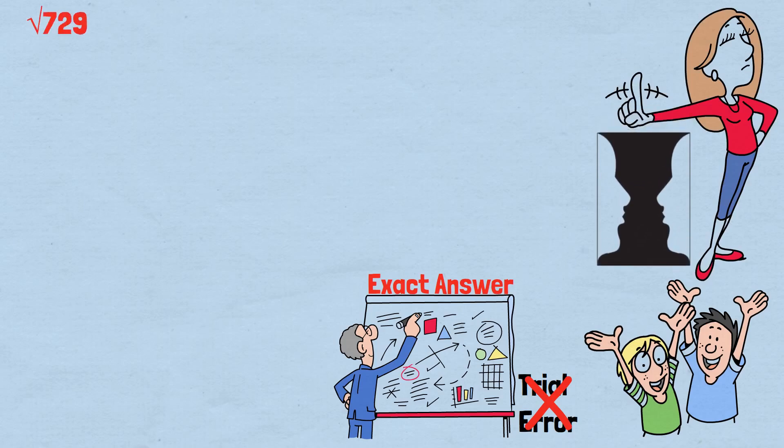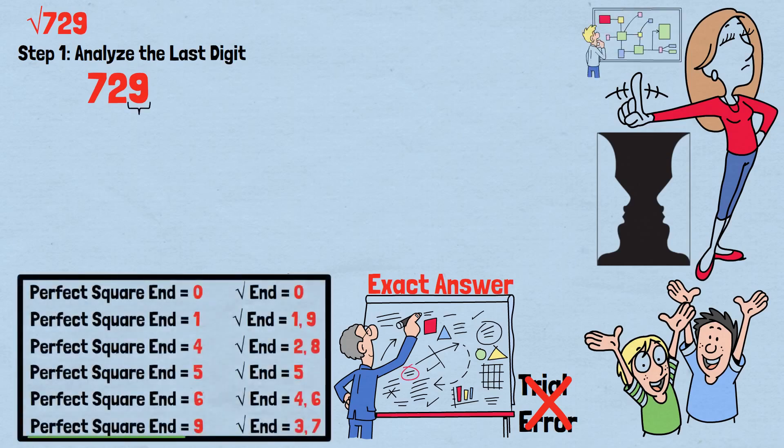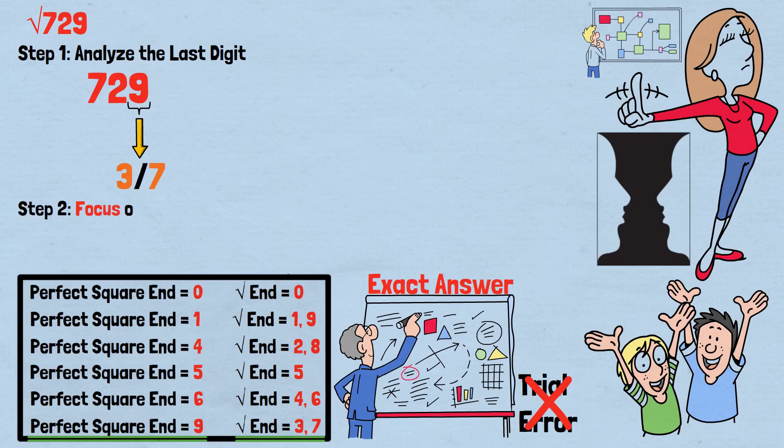The square root of 729. Step 1: Analyze the last digit. Our number is 729. The last digit is 9. According to our pattern, the square root could end in either 3 or 7. We write down both possibilities: 3 and 7. Step 2: Focus on the remaining digits. Cross out the last two digits, 29, and focus on 7.